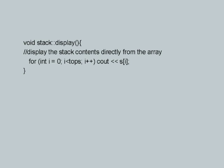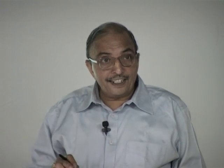So this is the definition of the stack display function — very simple, nothing else is required. For int i equal to 0, i less than tops, i++, cout S[i]. This is a bare minimal function; it does not put any fancy output. It will just output characters one by one. If there is a newline character it will go to a new line. If there is a null character, the cout will print backslash 0, because you are printing a character individually, not a string — that is a significant difference between handling characters and handling strings.